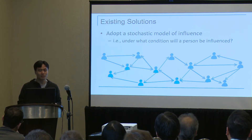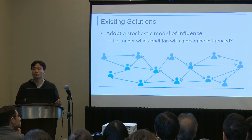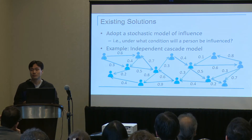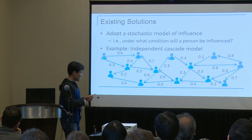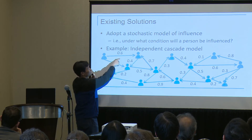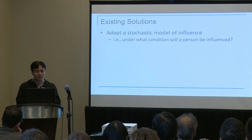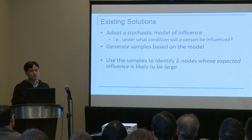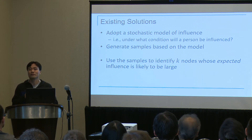To address this problem, existing solutions usually adopt a stochastic model of influence, which captures the conditions under which an individual will be influenced by another. The simplest model assumes that each edge in the social network is associated with a certain probability, and an individual at the beginning of an edge has that probability to influence the individual at the end of the edge. Under this model, existing solutions generate samples and use them to identify K nodes whose expected influence is likely to be large.